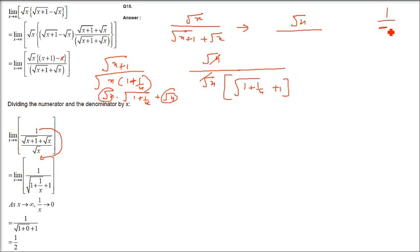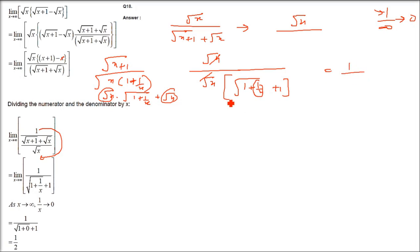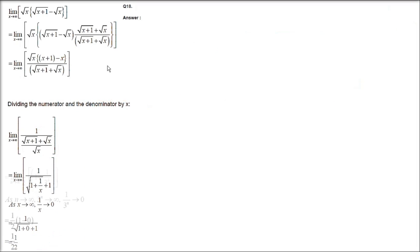Now let us apply the limit. 1 by infinity is going to be 0, because infinity is a very very big number. So we get 1 over under root(1 plus 0) plus 1, which is 1 over under root 1 plus 1, that is 1 over 2. So 1/2 is the answer here.